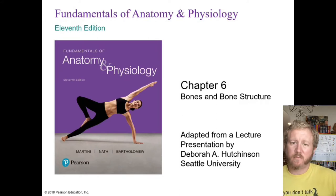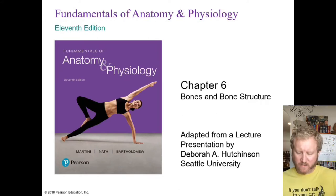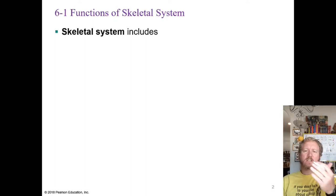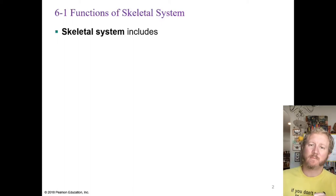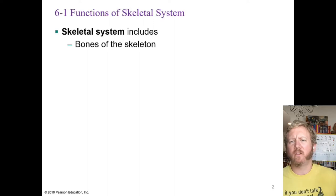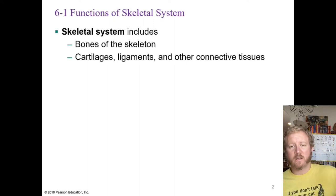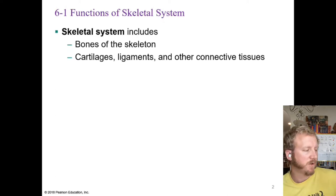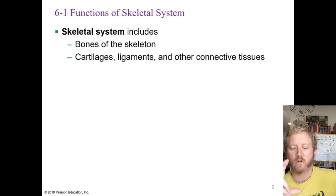We're going to get into bone cells, bone tissues, and stuff like that. This system is the skeletal system, which includes all the bones of the skeleton — which we'll learn about in subsequent videos — but also the cartilage, ligaments, and other connective tissues. The skeletal system is primarily all connective tissue, just different types. Ligaments hold bones together at joints.